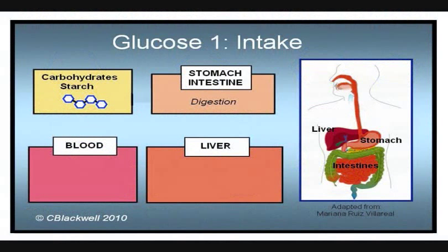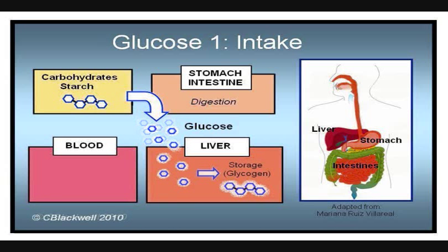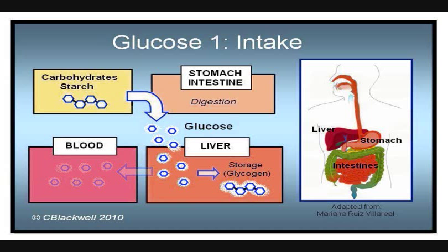The way the body handles glucose is a bit complicated, so we will break this process down into steps. First, the carbohydrates you eat are broken down by the stomach and intestines into their individual glucose units. The glucose then passes through the liver, where 60-80% of it goes into storage and the remainder ends up in the bloodstream. Glucose is stored in the liver by recombining it into long chains called glycogen, a lot like the starch you just digested.